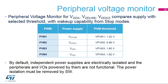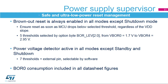It is the role of software to enable the needed supplies by removing the power isolation. The power supply supervisor guarantees a safe and ultra-low-power reset management. STM32L4 devices embed an ultra-low-power brownout reset, which is always enabled in all power modes except shutdown mode. The BOR ensures reset generation as soon as the MCU drops below the selected threshold, regardless of the VDD slope. Five thresholds from 1.7 to 2.95 volts are selected by option bytes programmed in flash memory. A power voltage detector can generate an interrupt when VDD crosses the selected threshold. The PVD can be enabled in all modes except standby and shutdown modes. Seven thresholds can be selected by software, and comparisons can also be done with an external pin.